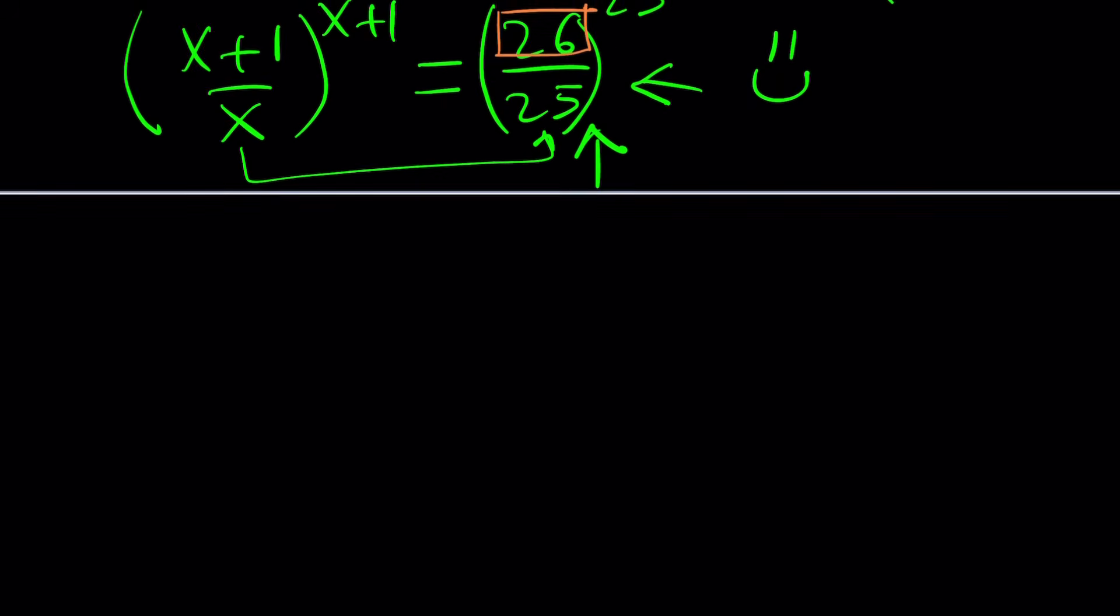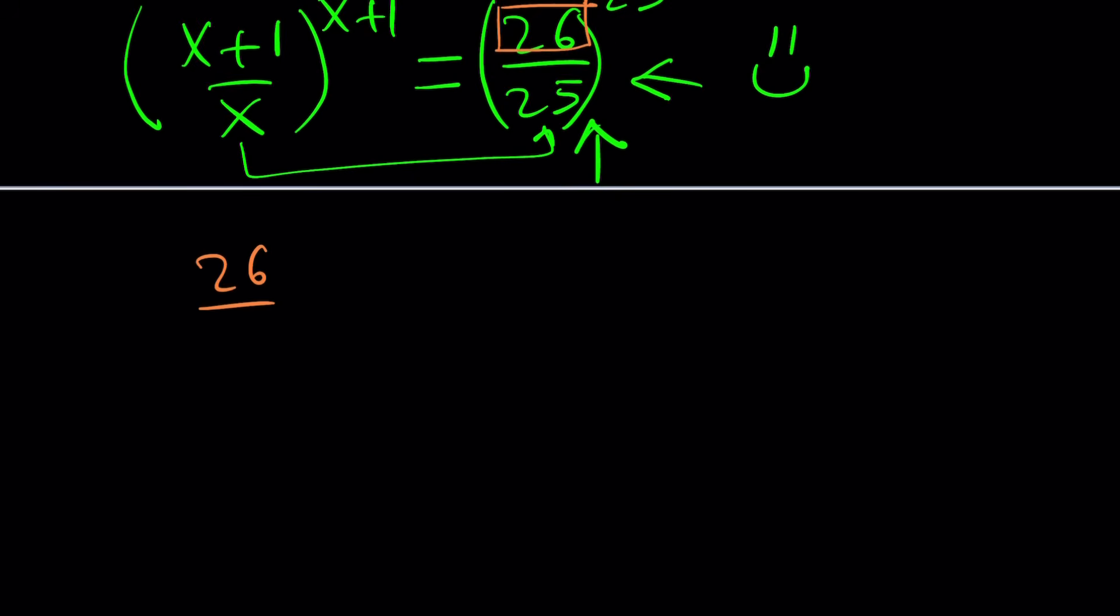So, we're going to start with (26/25)^25. And then we're going to go ahead and flip this. And the reason behind that is I want to change the exponent. I want to make it negative. I mean, why on earth would you want to do that, right? It's more trouble.